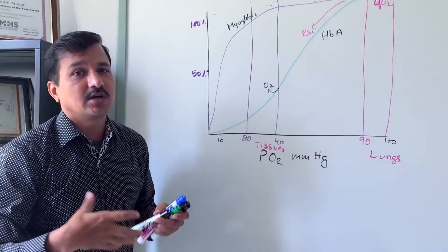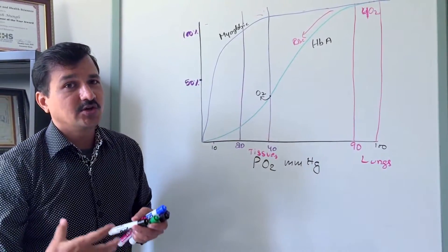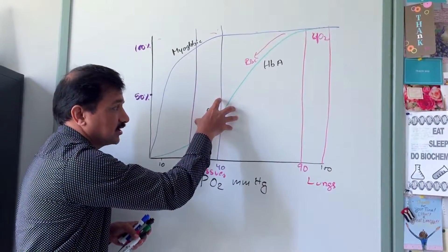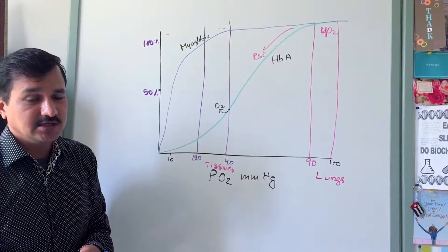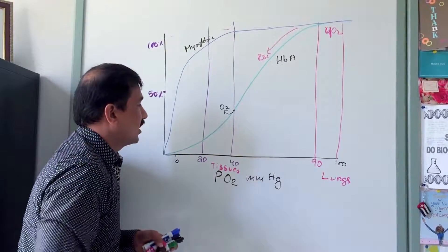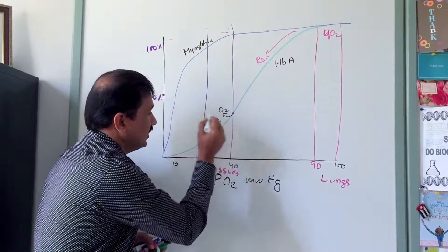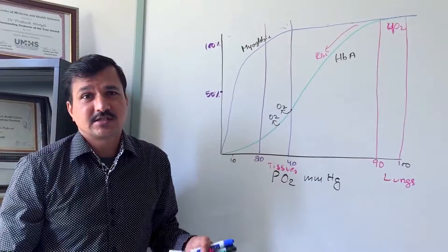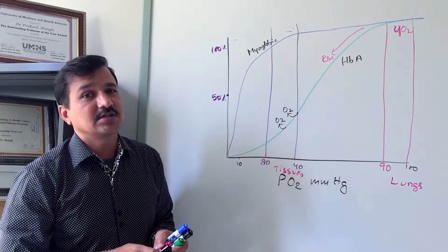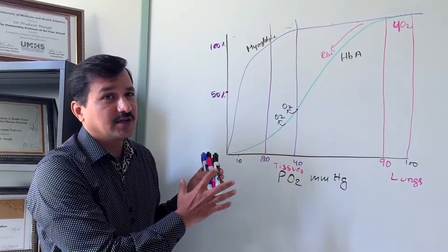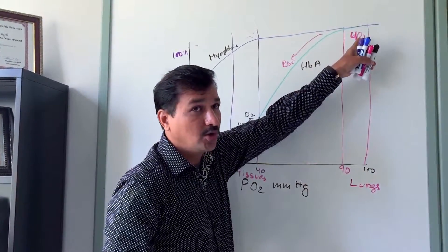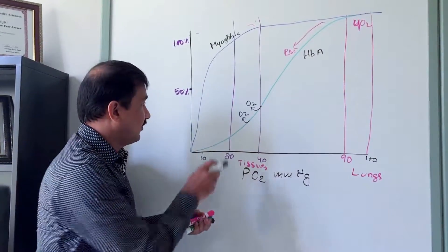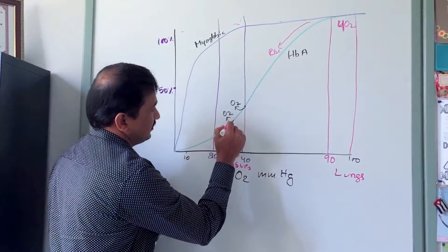As one subunit releases oxygen, it shifts toward the T state and induces neighboring subunits to also release oxygen through cooperativity. Under basal resting conditions, only two of the four oxygen molecules are released from hemoglobin. The remaining two are retained, corresponding to 50% saturation.